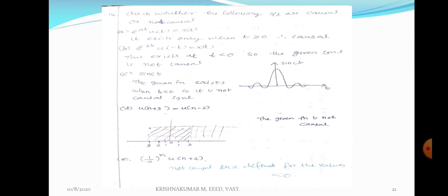The shaded portion is from minus 3 to plus 2. This function exists only from minus 3 to plus 2. The given function exists on both the left-hand side and right-hand side. So the given signal is not a causal signal.